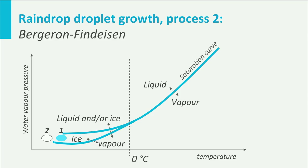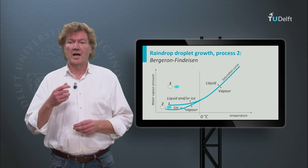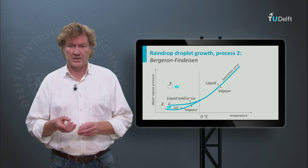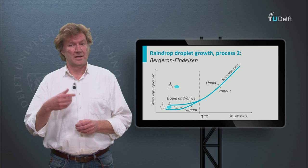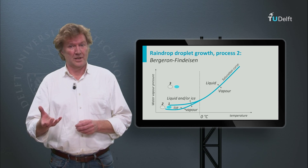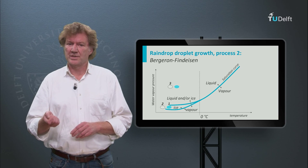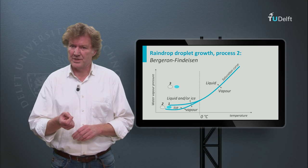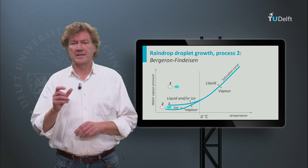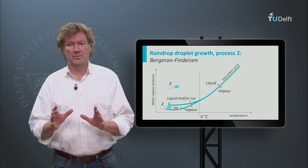Instead, evaporation of the liquid droplet has increased the number of water molecules in the environment of the ice particle, and the ice particle can grow even more. Above the saturation curve for both liquid water and ice, liquid and ice can coexist. But when the particles get too close to each other, the ice will grow at the expense of the liquid water.